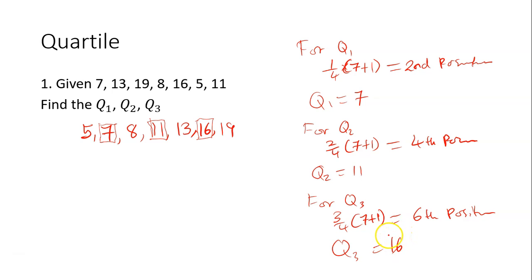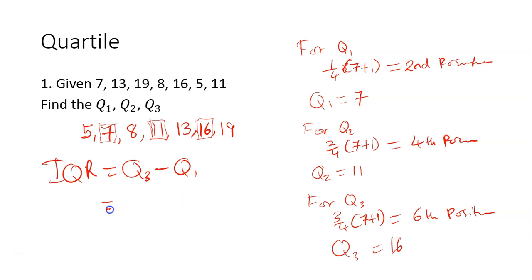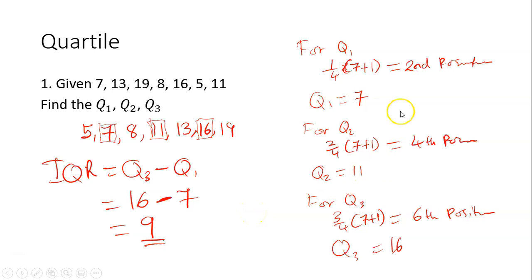The interquartile range formula is Q3 minus Q1: 16 − 7 = 9, so the IQR is 9. Notice that in this question all positions were whole numbers, so we could count directly. But what if you get a decimal position? We'll handle that in question 2.